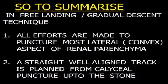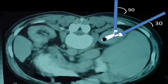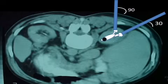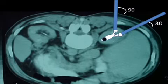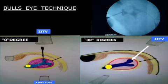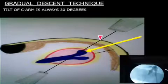To summarize: in the free landing or gradual descent technique, all efforts are made to puncture the most lateral aspect of the renal parenchyma, and a straight well-aligned track is planned — tilted 30 degrees onto the skin — achieved by positioning the C-arm tilted 30 degrees. In the bull's eye technique, the needle tip, needle hub, image intensifier, and X-ray tube are all kept in a straight line, whether the C-arm is at 0 or 30 degrees.